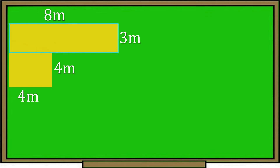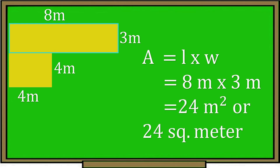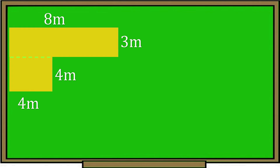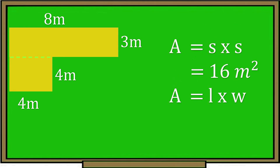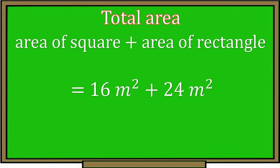The formula for the area of a rectangle is: area equals length times width. The length measures 8 meters and the width is 3 meters, so the answer is 24 square meters. Now let's add the area of the square and the area of the rectangle to get the total area. 16 square meters plus 24 square meters equals 40 square meters.